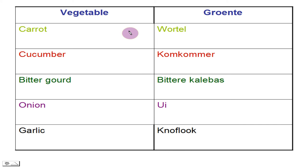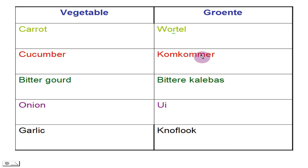Carrot. The R is pronounced with a trill. Wortel.